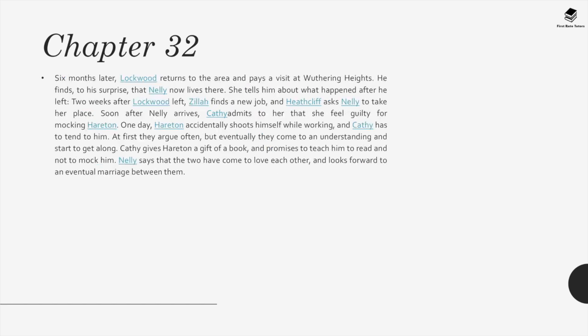Chapter 32. Six months later, Lockwood returns to the area and visits Wuthering Heights, finding to his surprise that Nelly now lives there. She tells him what happened after he left. Two weeks after Lockwood left, Zillah found a new job and Heathcliff asked Nelly to take her place. Soon after Nelly arrives, Cathy admits she feels guilty for mocking Hareton. One day Hareton accidentally shoots himself while working and Cathy has to tend to him. At first they argue often, but eventually they come to an understanding. Cathy gives Hareton a gift of a book and promises to teach him to read and not to mock him. Nelly says the two have come to love each other and looks forward to an eventual marriage between them.